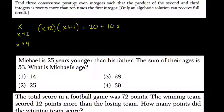We're trying to find these numbers, so we solve this equation. Distribute the x: x times x is x squared, x times 4 is 4x, 2 times x is 2x, and 2 times 4 is 8. That equals 20 plus 10x.